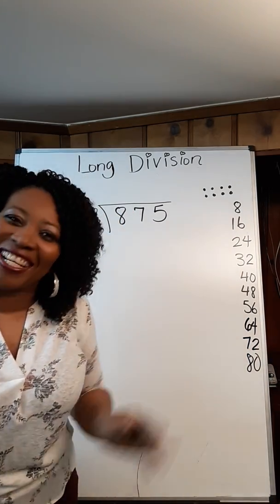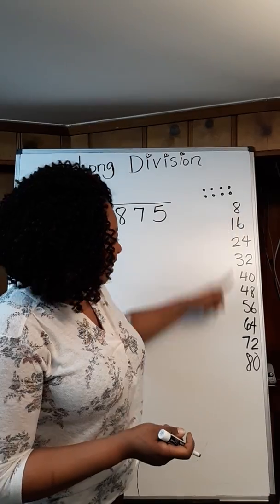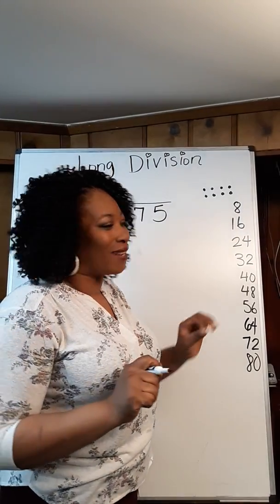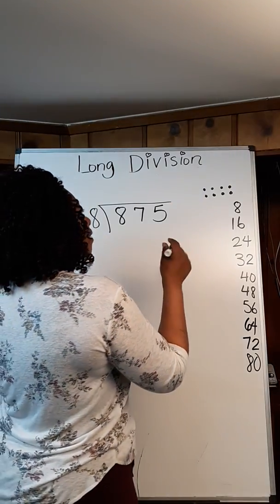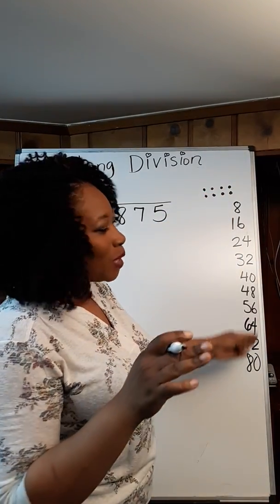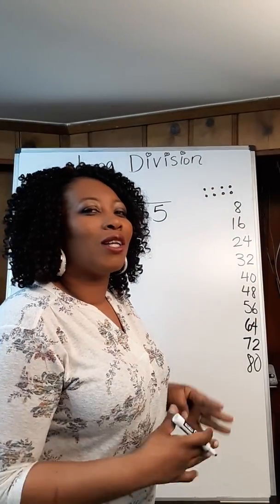You remember I said that once you get to 80 when the number is the same, it means that you did it right. So now we're going to list our multiples. I'm sorry, this is our multiple. I meant to say now we're going to list our groups.